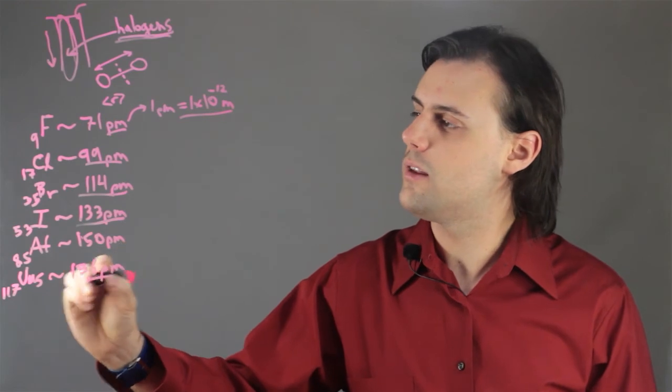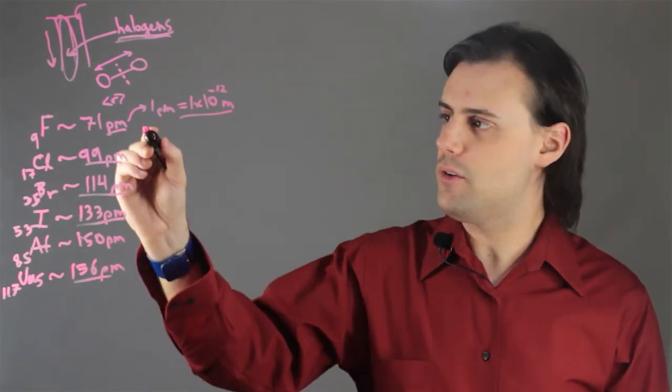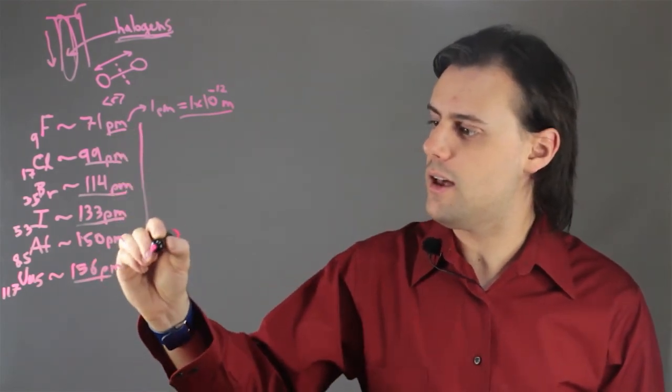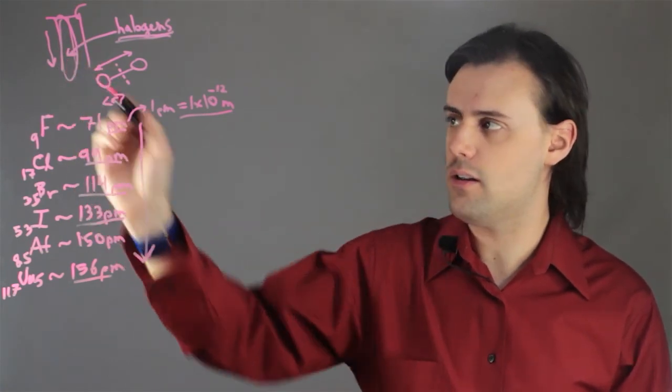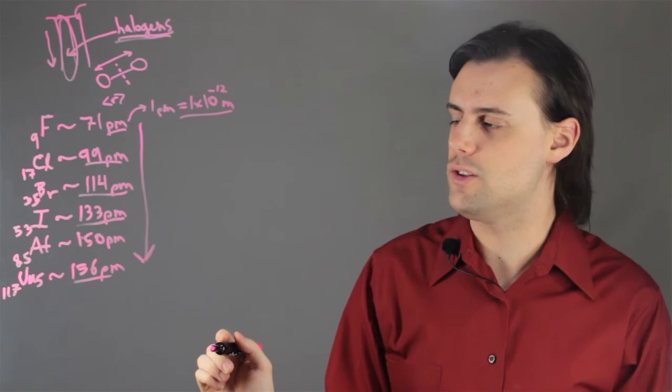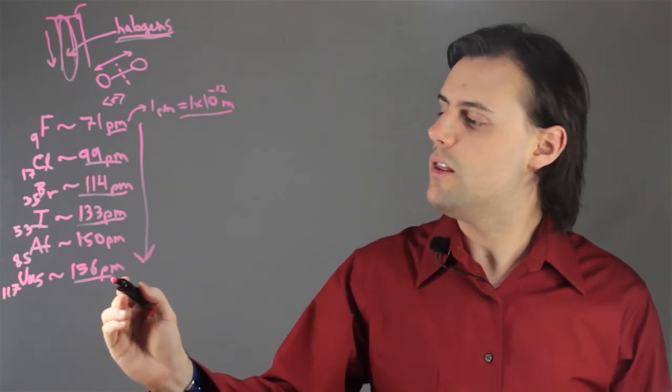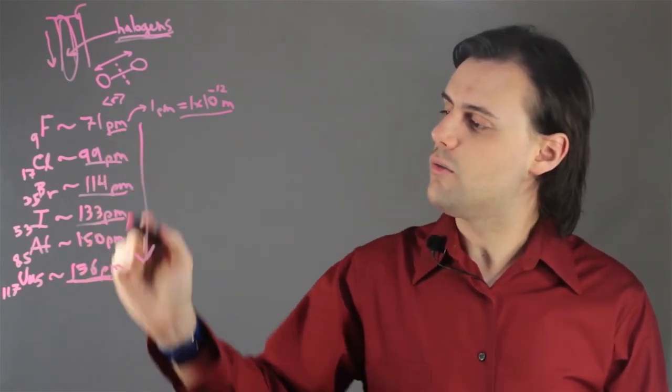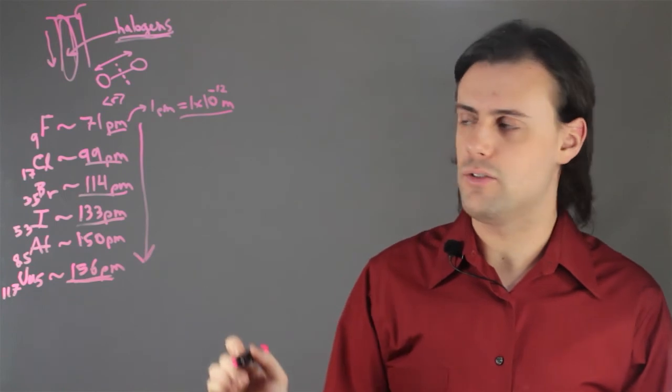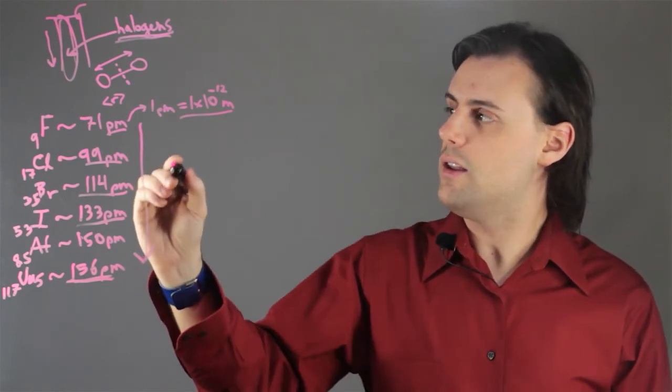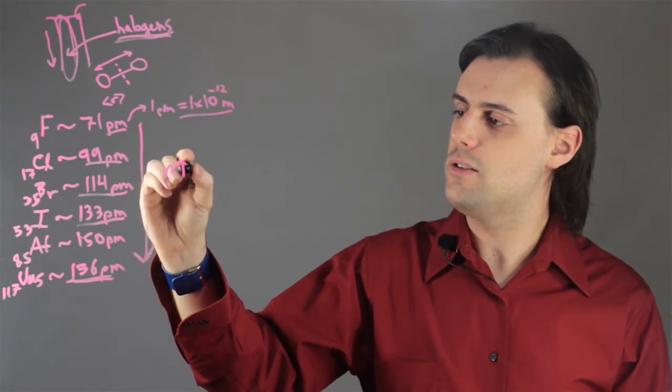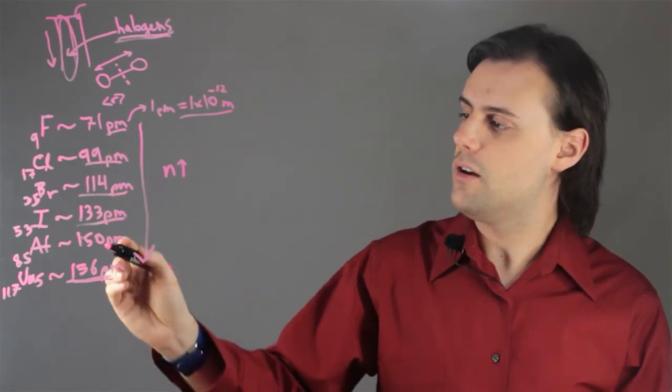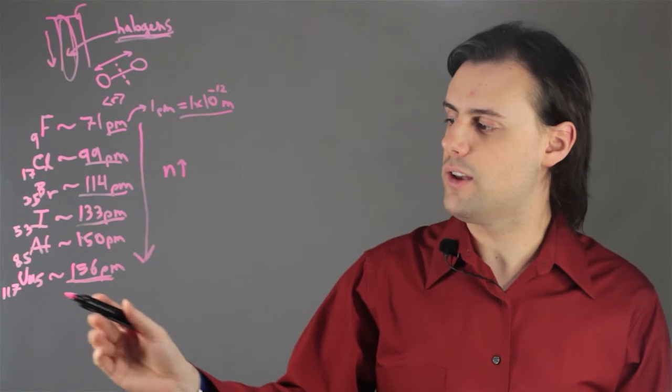So we see that there is a trend: as the mass of the nucleus increases as we go down the column of halogens in the periodic table, this atomic radius will increase. And this is due to the fact that you have an increase in the energy level for the electron configurations for all of these elements when they are not ionized, when they are neutral.